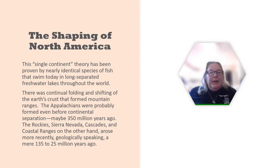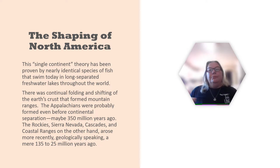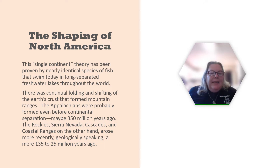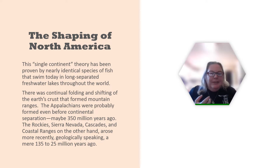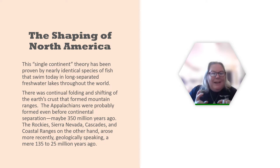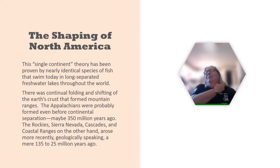The single continent theory has been proven by nearly identical species of fish that swim today in long-separated freshwater lakes throughout the world. I stress freshwater because saltwater fish could easily move through ocean connections, but the identical freshwater species prove these lakes were once combined. There was continual folding and shifting of the Earth's crust that formed mountain ranges. The Appalachians were probably formed even before continental separation, maybe 350 million years ago. The Rockies, Sierra Nevadas, Cascades, and coastal ranges arose more recently — geologically speaking, a mere 135 to 25 million years ago.